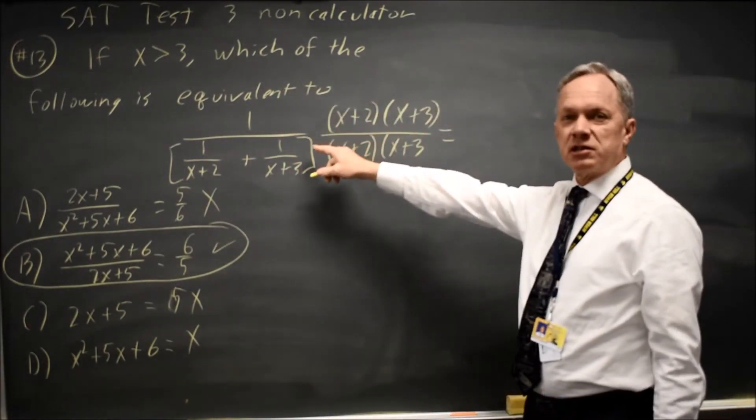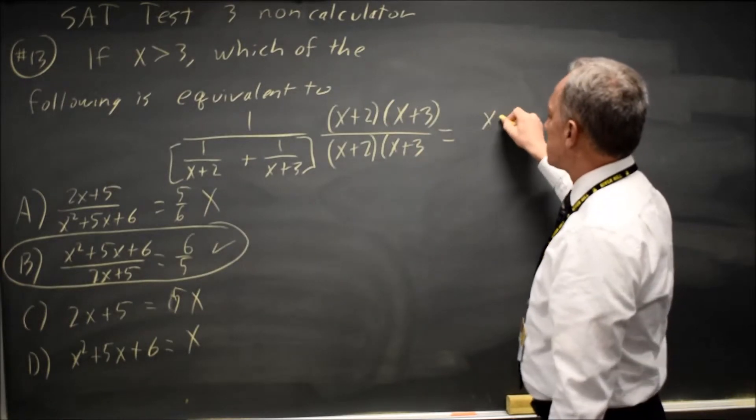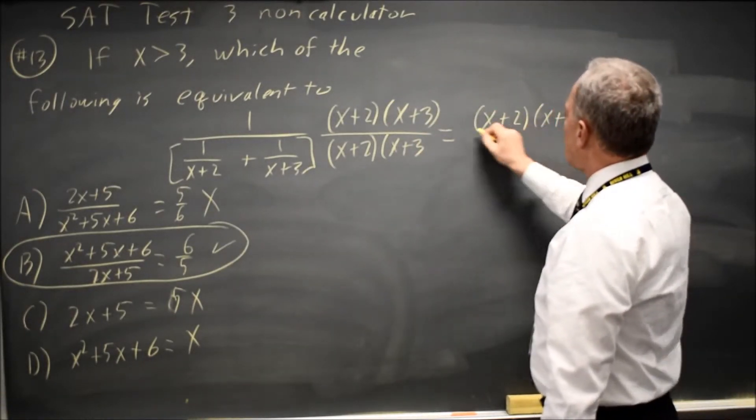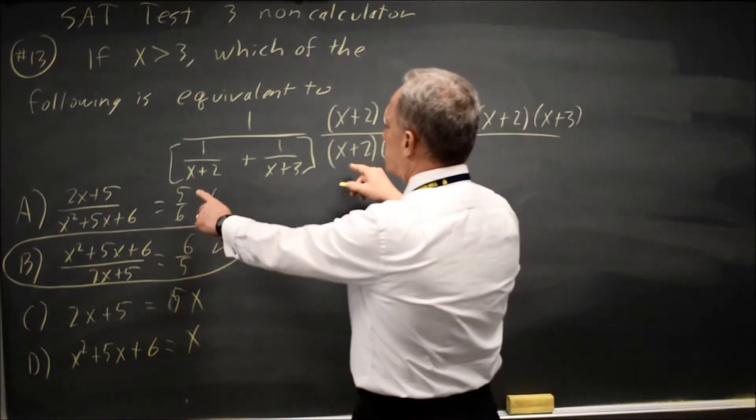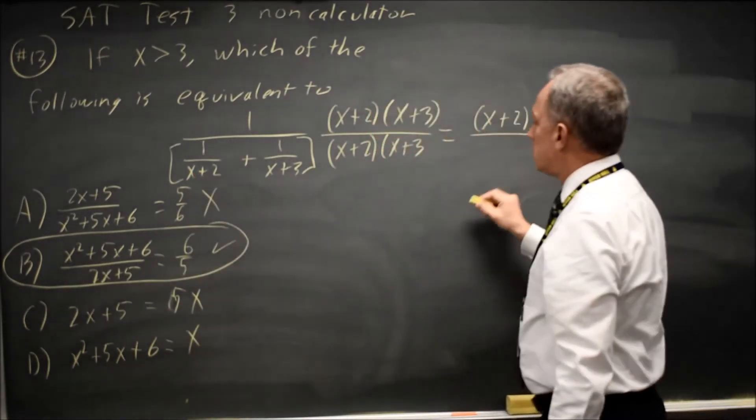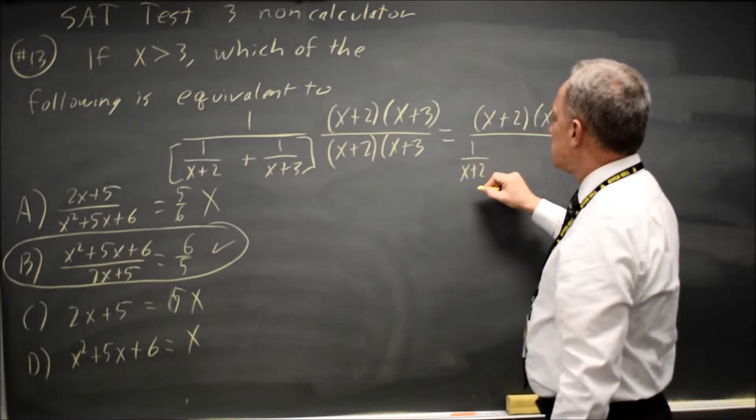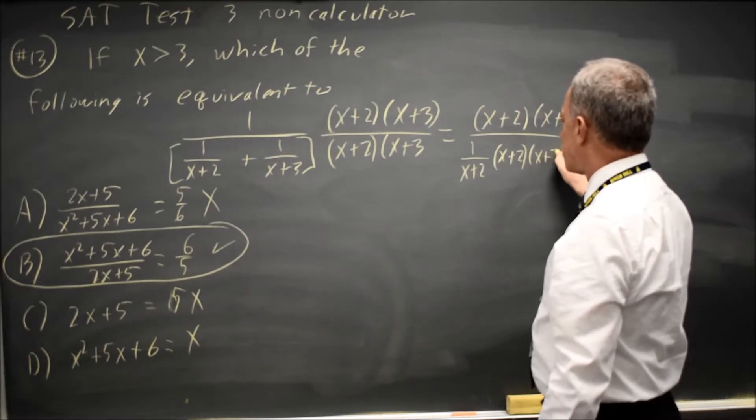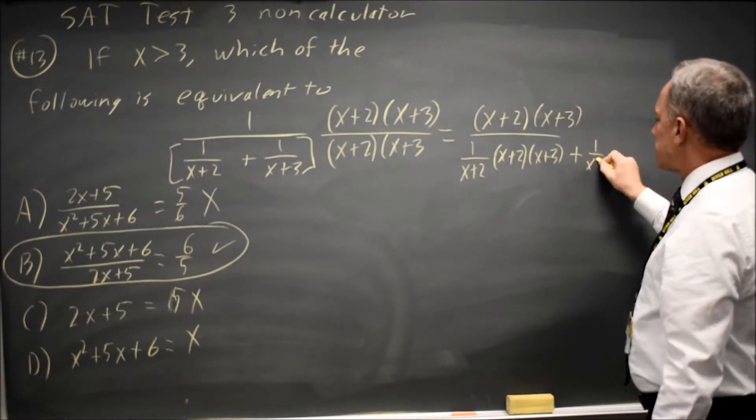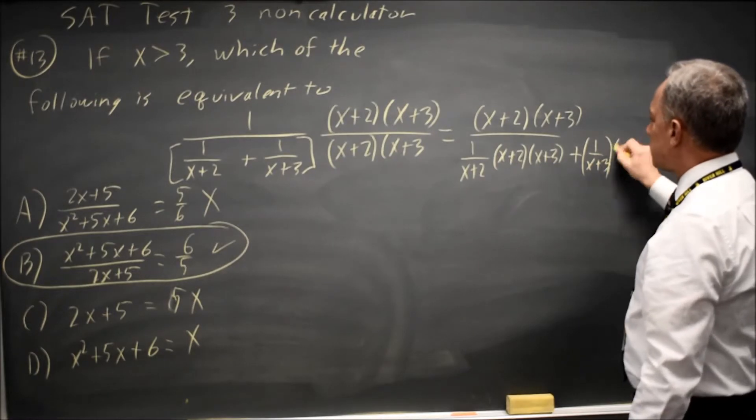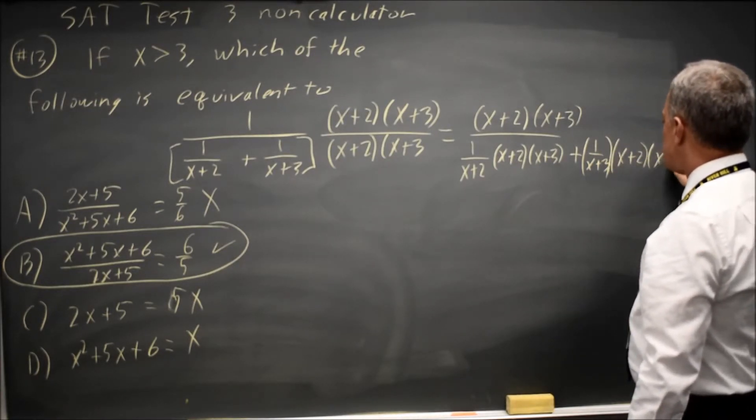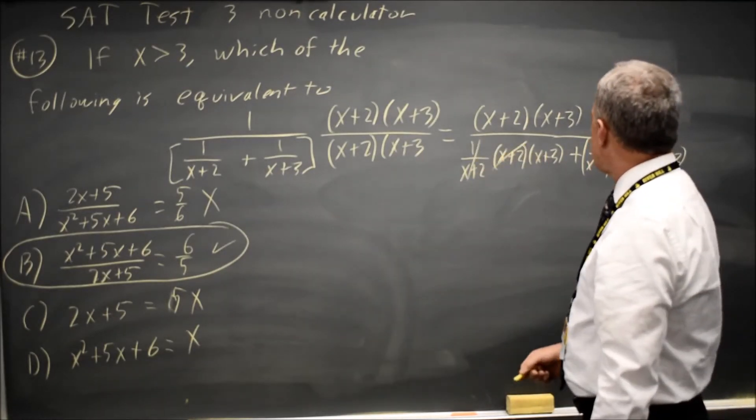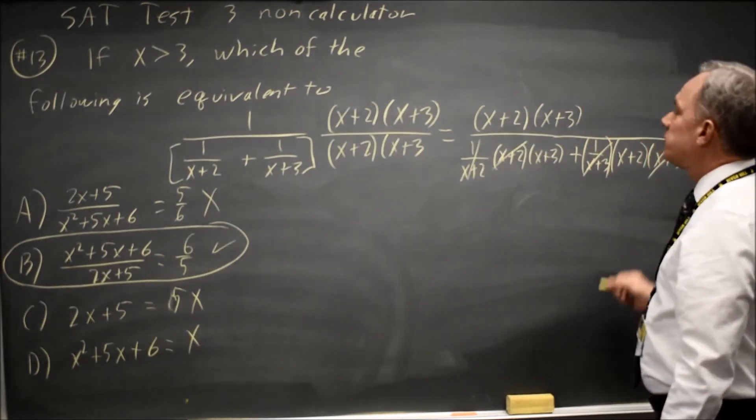The way you multiply fractions is you multiply numerators, which gives me 1 times x plus 2 times x plus 3. And then you multiply denominators distributing. So that would be 1 over x plus 2 times x plus 2 times x plus 3 plus 1 over x plus 3 times x plus 2 times x plus 3. 1 over x plus 2 times x plus 2 is 1. 1 over x plus 3 times x plus 3 is 1.